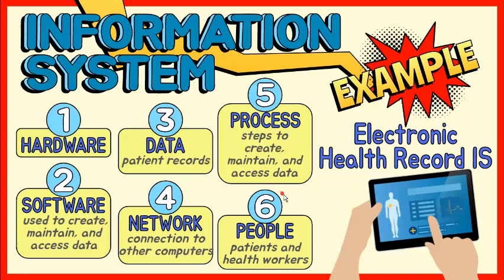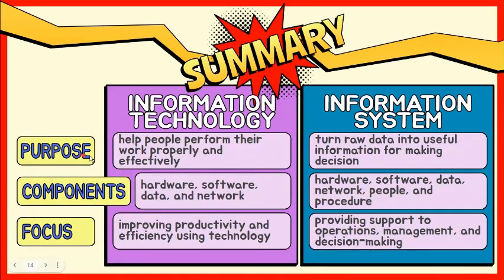Patients and health workers are the ones using the information generated. As a summary, information technology's main purpose is to help people perform their work properly and effectively and achieve their objectives within an organization or business. It is generally composed of hardware, software, data, and network, and it mainly focuses on improving productivity and efficiency using technology. On the other hand, information system's main purpose is to turn raw data into useful information that will provide support for making decisions within an organization or business. It is generally composed of hardware, software, data, network, people, and procedure, and it mainly focuses on providing support to operations, management, and decision making.